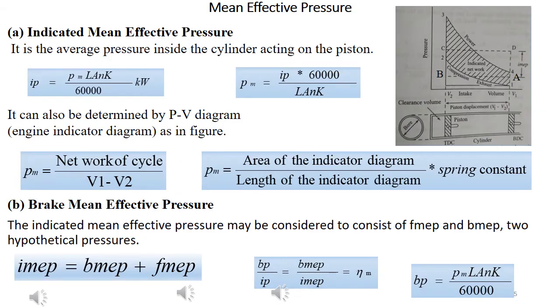Mean effective pressure is the average pressure inside the cylinder. It increases as the pressure increases. For any particular engine, at a given operating speed and a power output, there will be a specific indicated mean effective pressure, and there will be corresponding brake mean effective pressure.